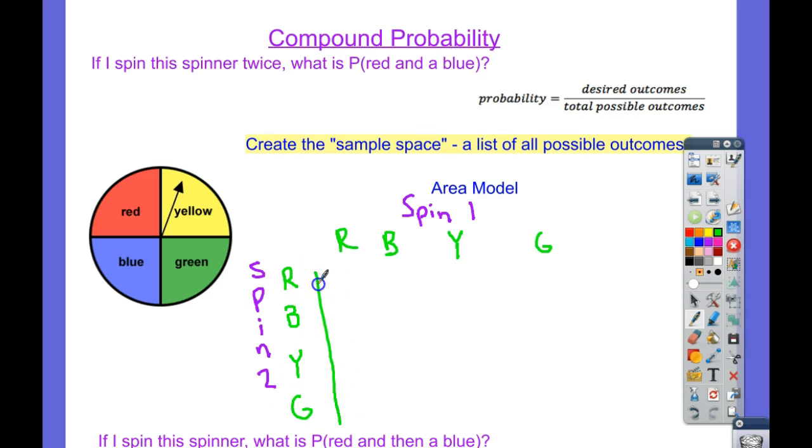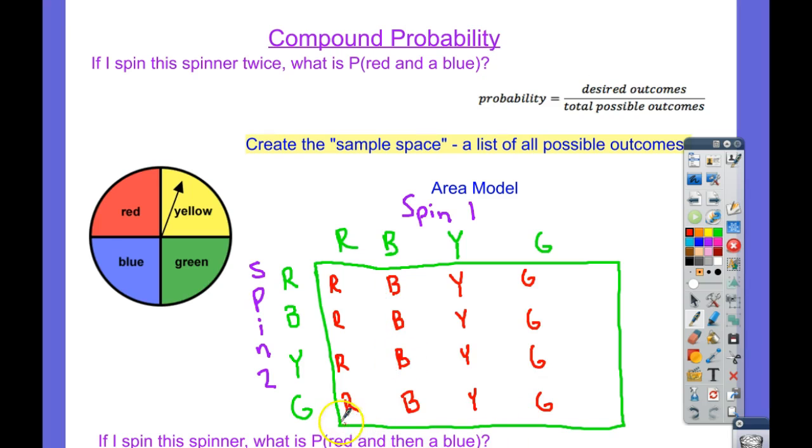Then we're going to make it a nice little square here. I do my best on my electronic writing thing. And then we're just going to go through and bring spin one down. Red, red, red, red. Blue, blue, blue, blue, and so on. So what I've done is brought down each one of the possibilities for spin one. And let me break this up.